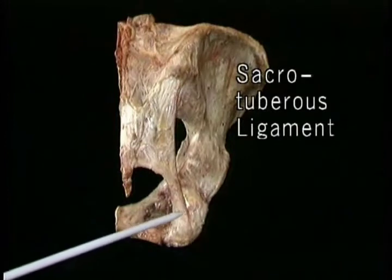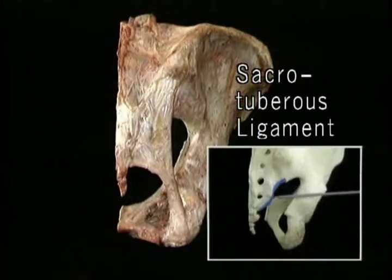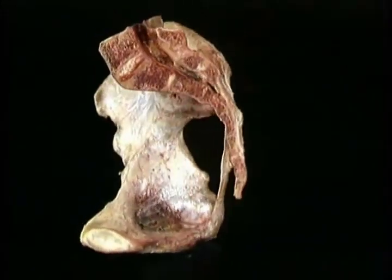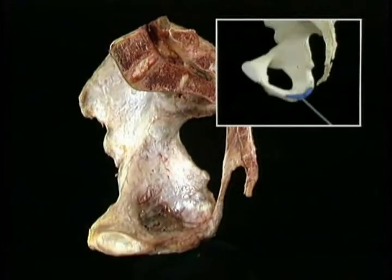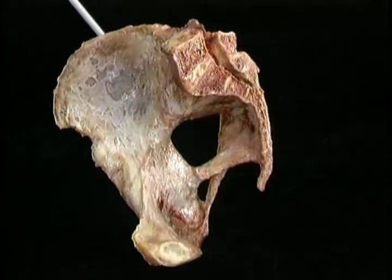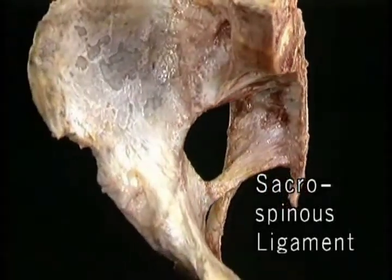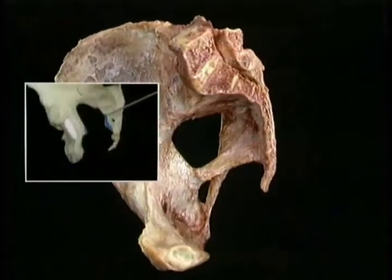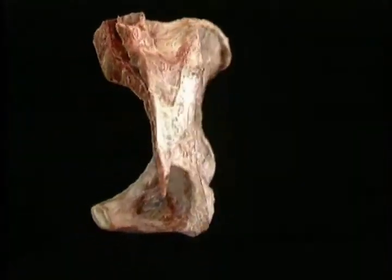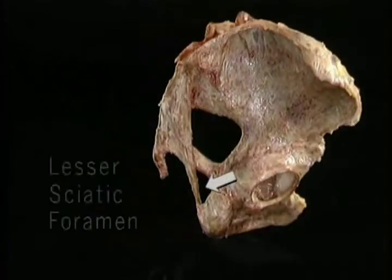Here's the sacrotuberous ligament. It arises on the back of the sacrum, passes laterally downward and slightly forward, and is inserted on the ischial tuberosity. The sacrospinous ligament lies in front of the sacrotuberous ligament and medial to it. It goes from the edge of the sacrum to the ischial spine. These two ligaments divide the gap between the sacrum and the ischium into two openings: the greater sciatic foramen and the lesser sciatic foramen.